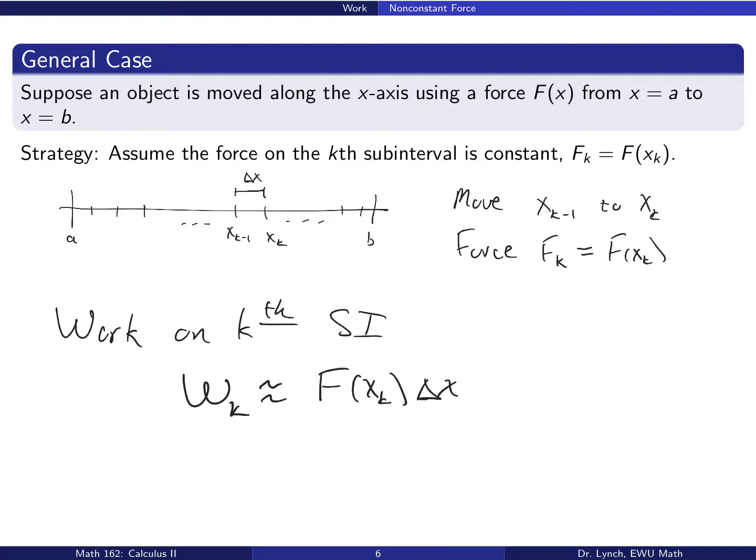So here's that calculation exactly as we described it. If we move from x sub k minus 1 to x sub k, that's a distance delta x, using a force f of x sub k, approximating that variable force to be constant over the sub-interval. Then the work on that k-th sub-interval, w sub k, is approximately f of x sub k delta x. Use a sum to add up all these little bits of work. Let n go to infinity. The sum becomes exact.